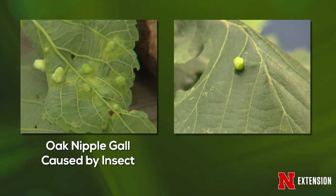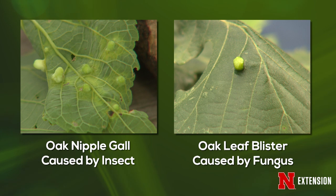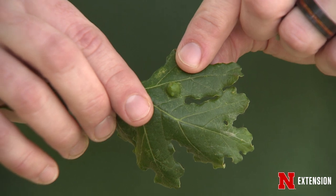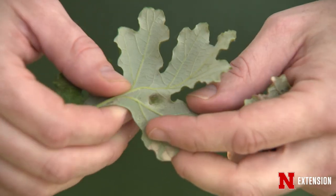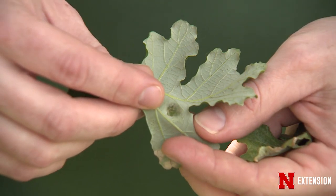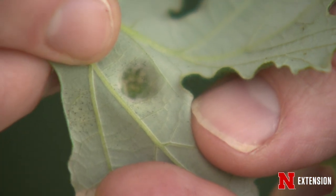Oak leaf blister looks very similar to a lot of our insects that form leaf galls. However, if you flip that leaf over and look on the bottom of it, you'll actually notice that it's hollow on the underside. This oak leaf blister is actually caused by a fungal pathogen, Taphrina.